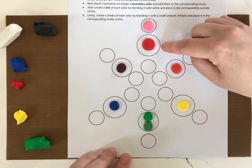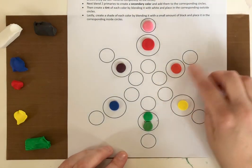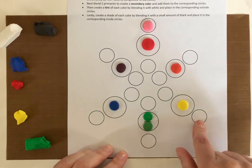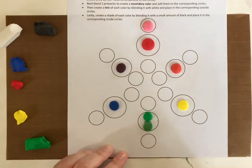So you'll do a tint of the red which makes pink, a tint of the orange which makes a lighter orange, tint of yellow so light yellow, and you keep going around the circle.